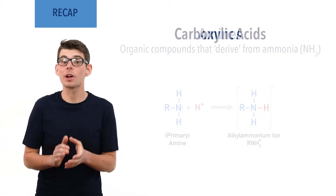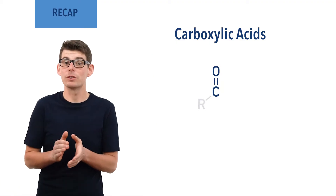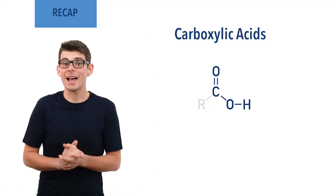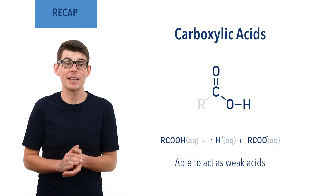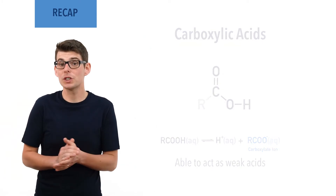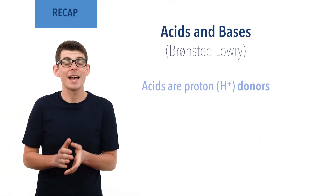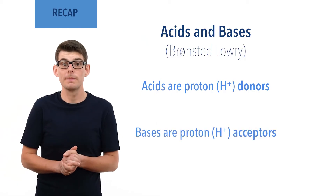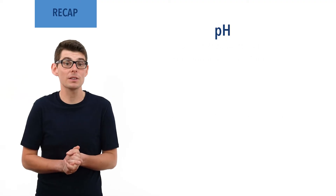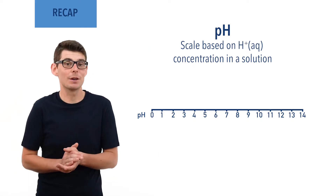Carboxylic acids are a class of organic compounds that contain a carbonyl group (C double bond O) and a hydroxy (OH) group on the same carbon atom. They are able to act as weak acids and partially dissociate in solution, forming carboxylate ions. According to the Bronsted-Lowry definition, acids are proton donors and bases are proton acceptors. pH is a scale used to represent the concentration of H+ ions in a solution and can be considered a measure of acidity and alkalinity.